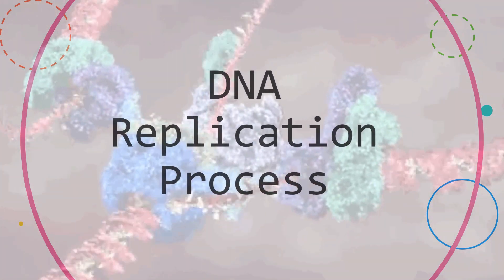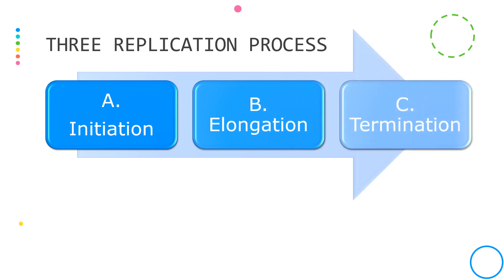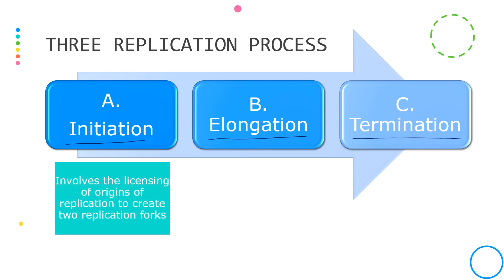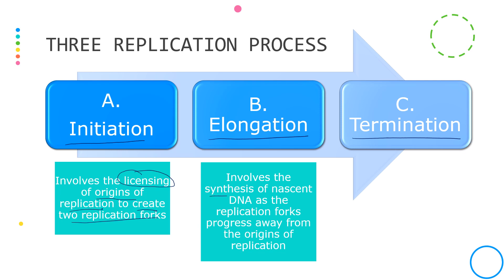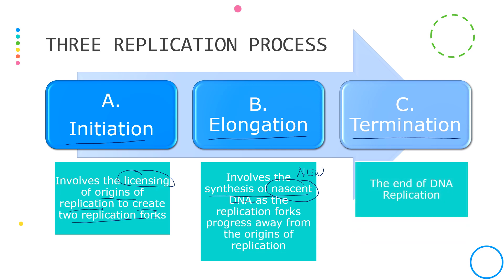DNA replication has three stages: initiation, followed by elongation, and finally termination. Initiation involves the licensing of origins of replication to create two replication forks. The second stage, elongation, is the actual synthesis of nascent DNA — the new DNA strand that will be formed. And termination simply means the end of DNA replication.